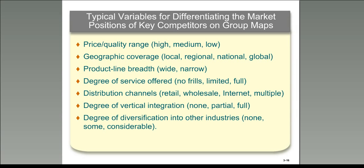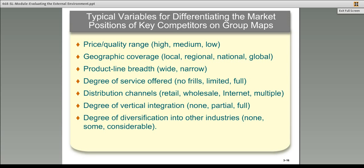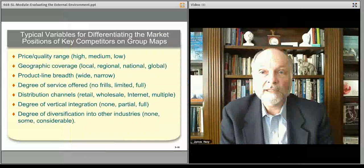You might look at geographic coverage — where they're located — because you may have firms that compete in a very similar way with a very low price, but they're regionally located: one is in the northeast, another is in the south, and they may not compete with each other at all because of geographic distinctions. You might look at product line breadth — are they one particular product, or do they have a broad product base? Degrees of service offered, like a standard no-frills hamburger versus something with a full plate of toppings. You might also look at the degree of vertical integration — whether they own their suppliers and distribution channels — and how diversified the firms are, since diversified firms may act differently than firms solely positioned in one marketplace.